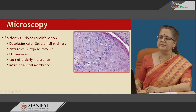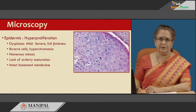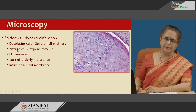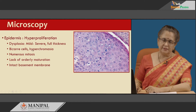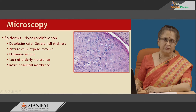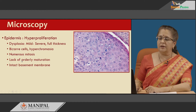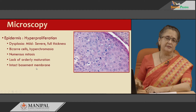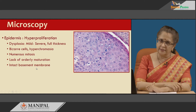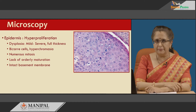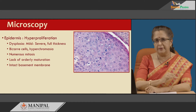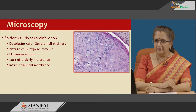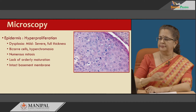When dysplasia is full thickness, it is known as carcinoma in situ, in which case you can get bizarre cells, hyperchromasia, numerous mitoses, and lack of orderly maturation. The most important aspect is that even in carcinoma in situ, the basement membrane — which demarcates the epidermis from the dermis below — remains intact.